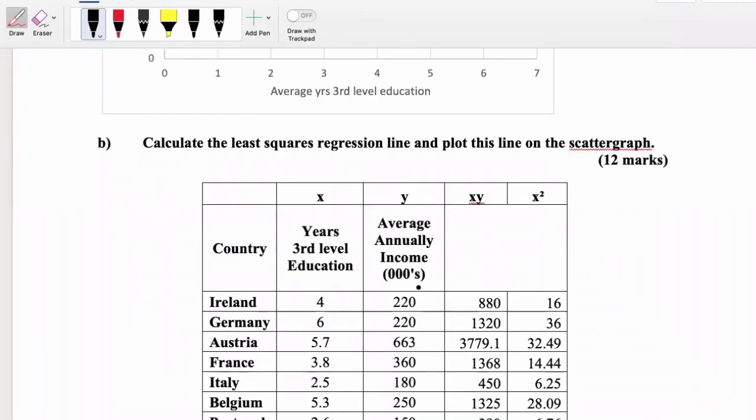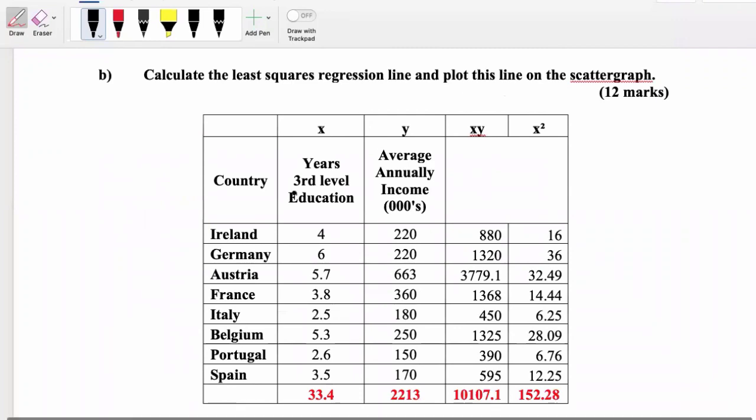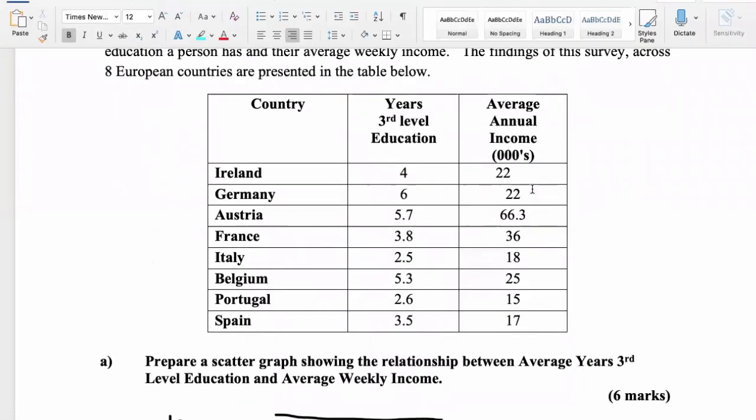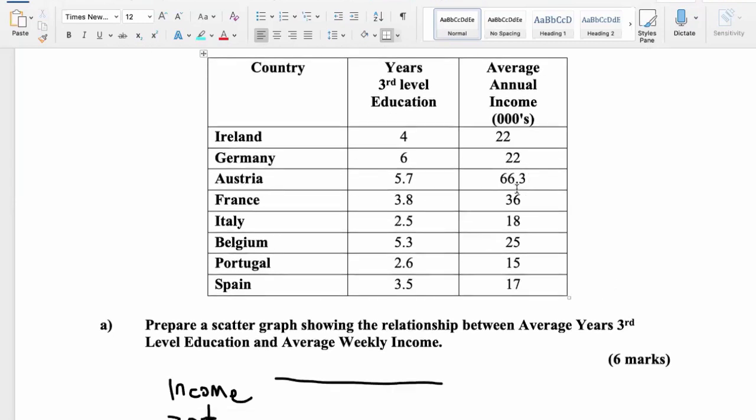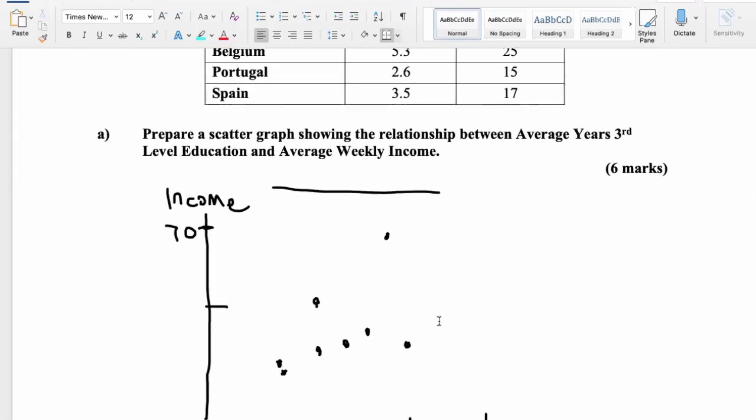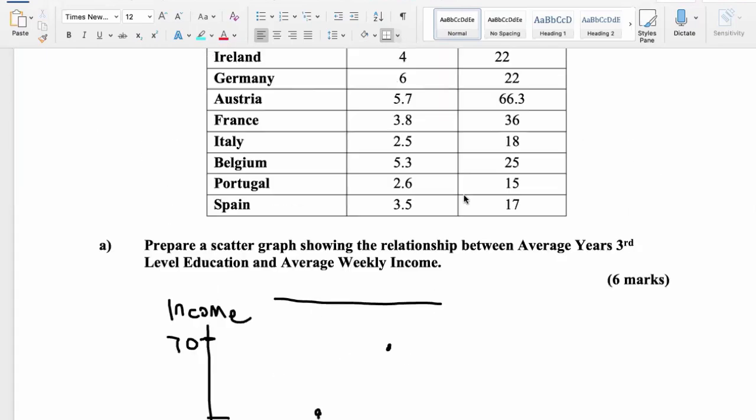Your second question was to calculate the least squares regression and plot it on the graph. The reason why I'm going to make a few changes to this is because I took out the zeros here. There was a zero here, and apparently the solution that I have wasn't updated. It must have been updated on Moodle, but not my own solution. So just bear with me in terms of this being correct, and I'm going to update everything as we go on.